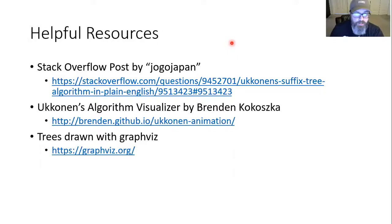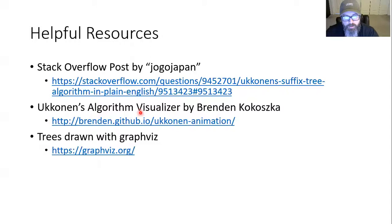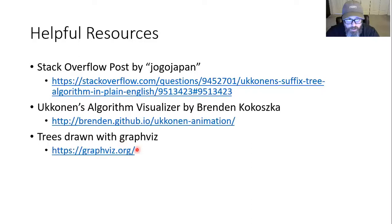Some helpful resources used while making this: there's a Stack Overflow post by Jogo Japan with a link provided. There's also a visualizer by Brendan Kokoska on GitHub where you can type in your string and it steps through updates of remainder and active point for each step — the only complaint is that leaf node values aren't always accurate at the end. All the trees in this presentation were drawn with GraphViz. That's the presentation — thank you.